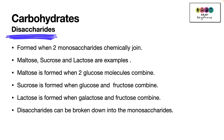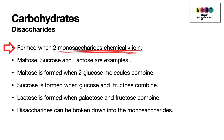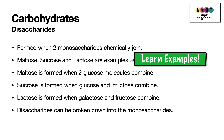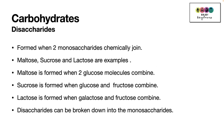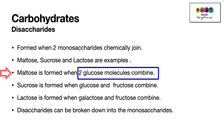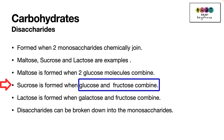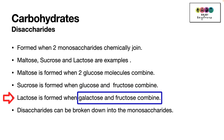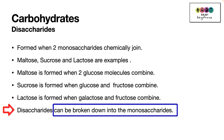Disaccharides are formed when two monosaccharides chemically join. Maltose, sucrose, and lactose are examples. Maltose is formed when two glucose molecules combine; sucrose is formed when glucose and fructose combine; and lactose is formed when galactose and fructose combine. Disaccharides can be broken down into those monosaccharides.